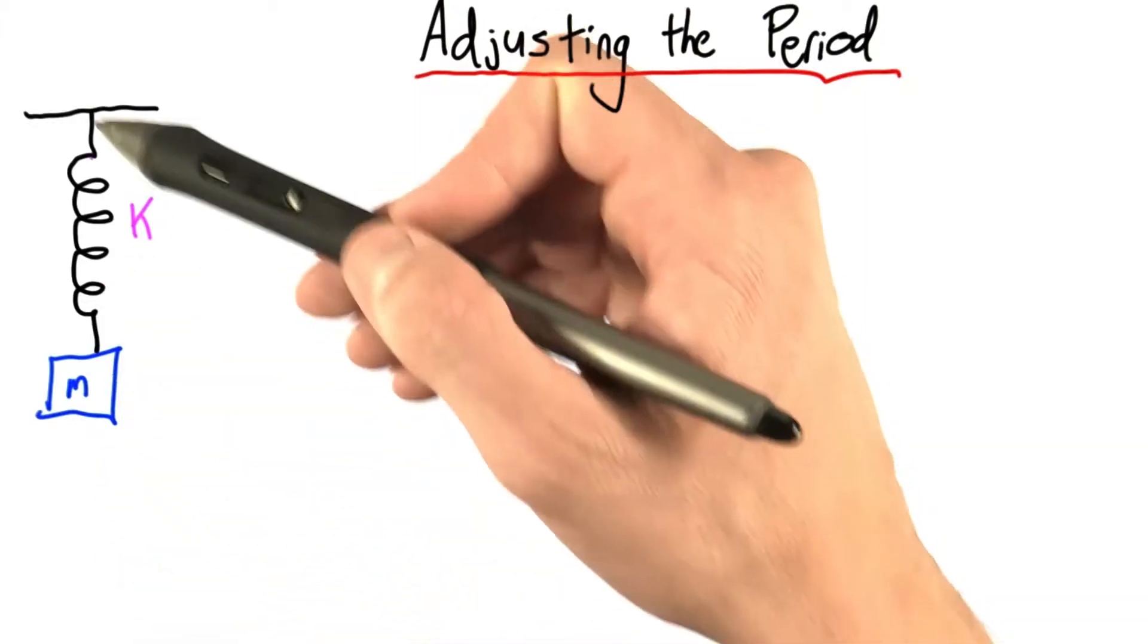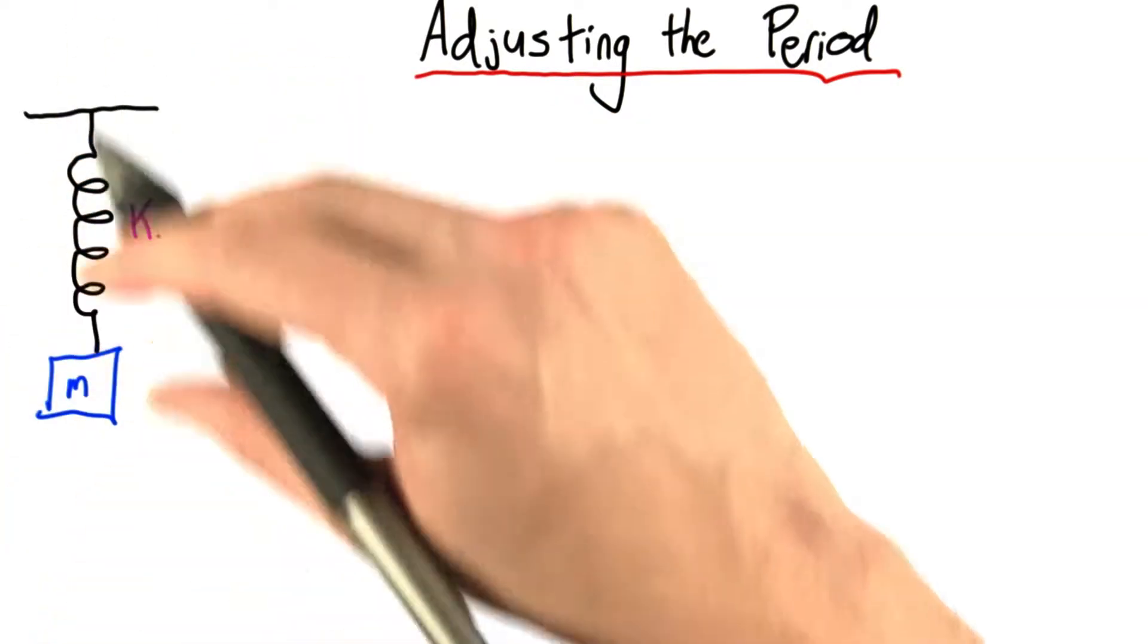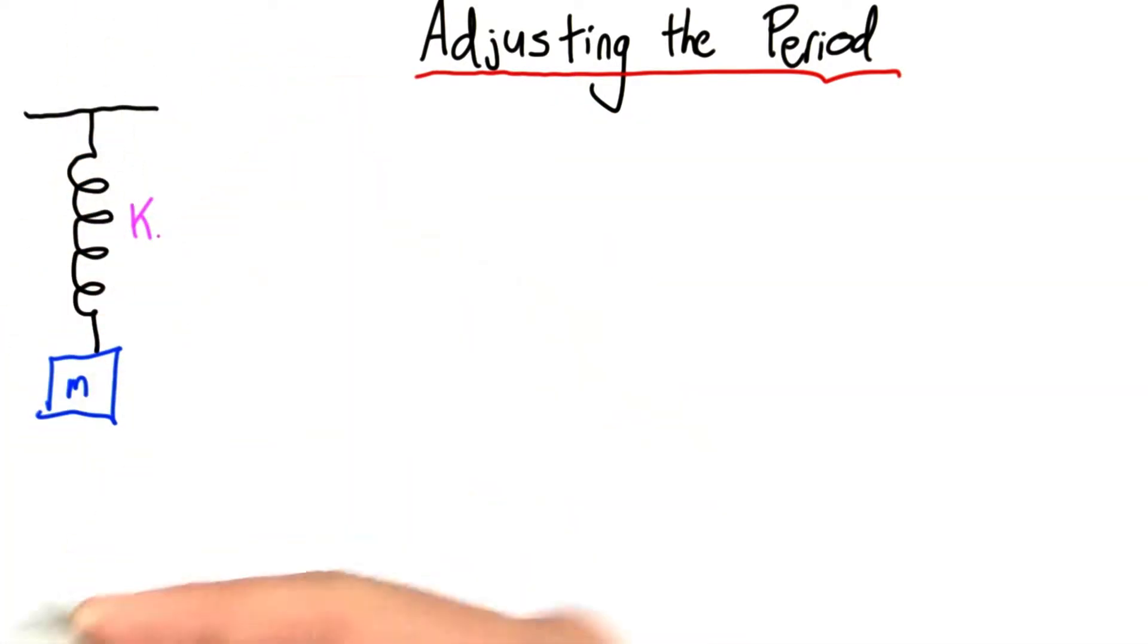Okay, so here's our mass hanging from the ceiling on a spring with a spring constant k. If I start it shaking up and down, oscillating, we know it will move with a certain period.